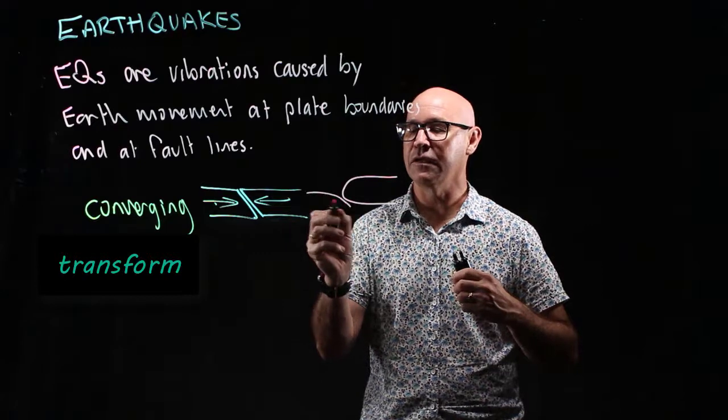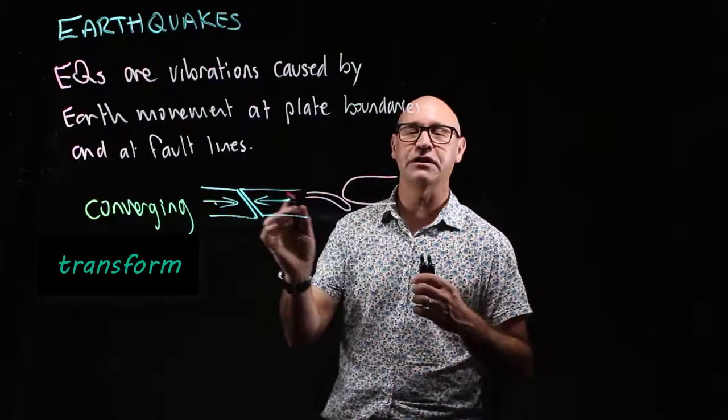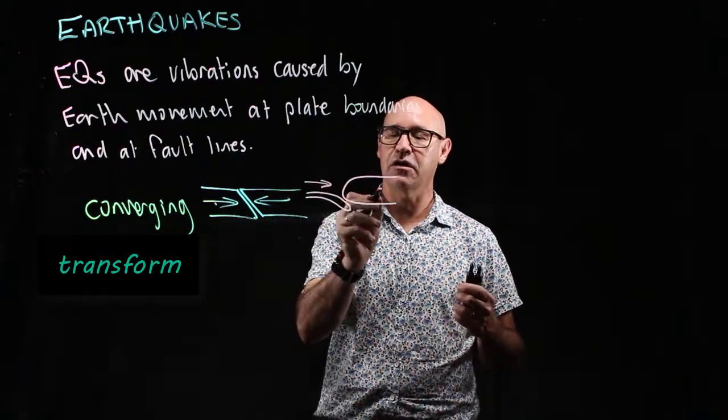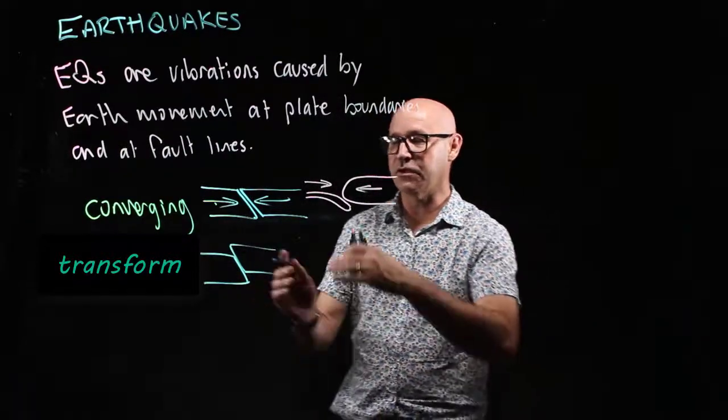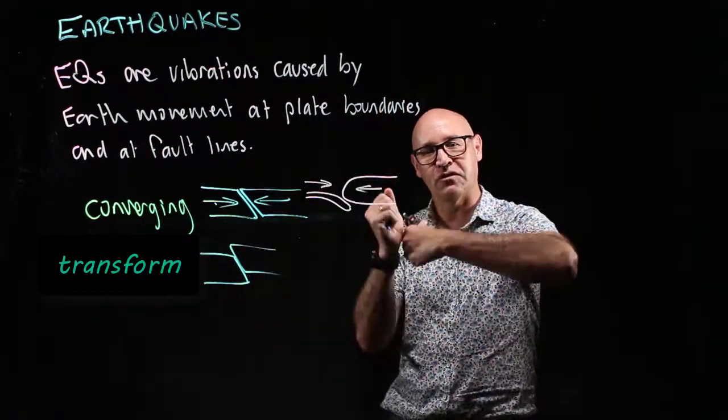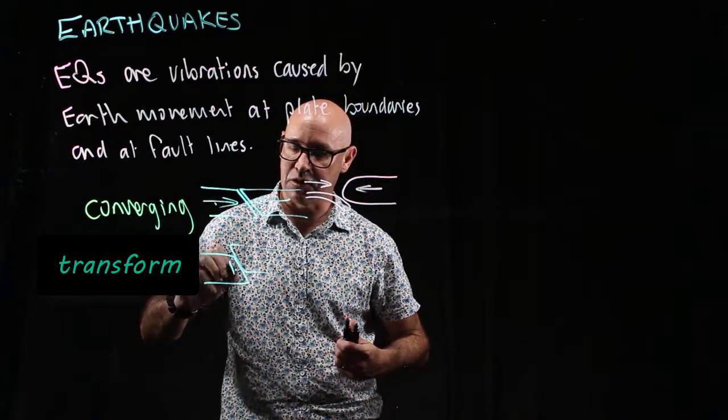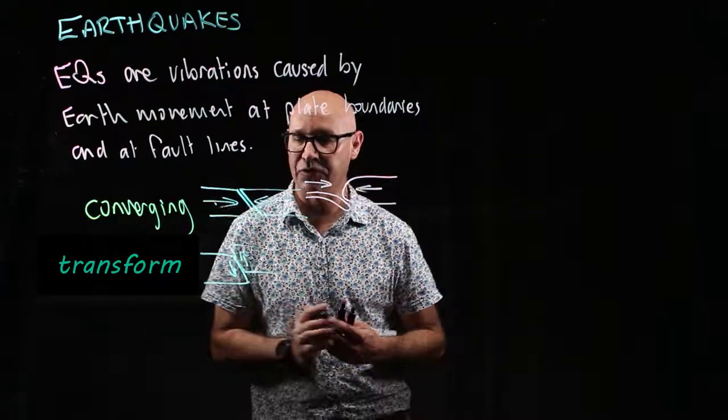The oceanic plate is thinner and it tends to move underneath the continental plate. And the transverse plate boundary, we've got the two plates that actually slide past each other. So one moves in this direction and one moves in that direction.